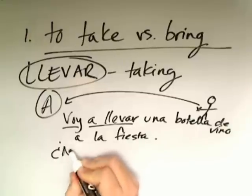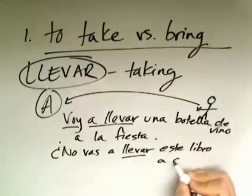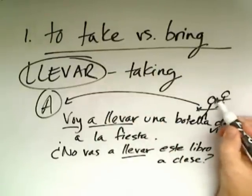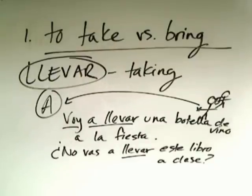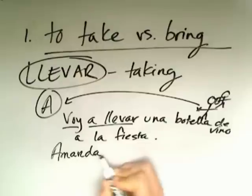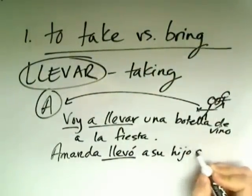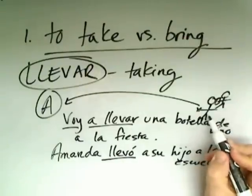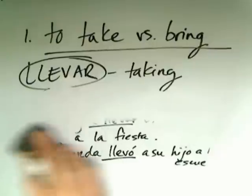Or maybe in question form: ¿No vas a llevar este libro a clase? So again, we're not at class, we're having a discussion about class, and I say to you, ¿no vas a llevar este libro a clase? — Aren't you going to take this book to class? One more example: Amanda llevó a su hijo a la escuela — past tense. She's here with her son, she took him to school. So llevar is to take something where the person in question is not present.